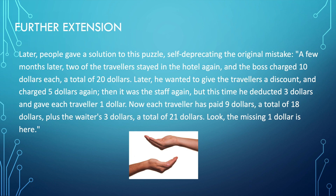Later, people gave a solution to this puzzle, self-deprecating the original mistake. A few months later, two of the travellers stayed in the hotel again, and the boss charged $10 each, a total of $20. Later, he wanted to give the travellers a discount and charged $5 again. Then the staff deducted $3 and gave each traveller $1. Now the traveller has paid $9 each, a total of $18, plus the waiter's $3, a total of $21. Look, the missing $1 is here.